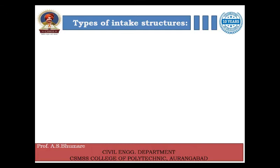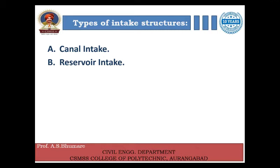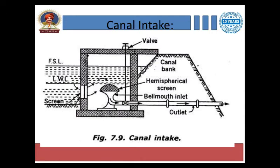Then we will study the types of intake structures. First of all, if we collect the water from a canal, then we have to build a canal intake. If we have to collect water from a reservoir, then we have to construct a reservoir intake, such as lake intake, and also river intake. These are the main four types of intake. Now overlook the diagram — pause the video and draw a neat labeled diagram, because in your examination you have to draw this diagram and explain the structures. This is the canal intake structure, meaning if we want to draw water from a canal, we will use this type of construction.